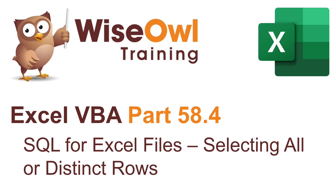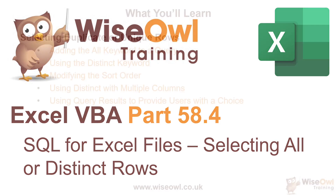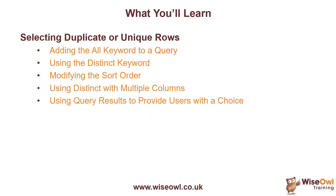Welcome to this Wise Owl Excel VBA tutorial. In this part of our series on writing SQL for Excel files, we're going to look at how you can select either all or the distinct rows from a data source. We'll begin by explaining how to add the ALL keyword to a query and what that does, and then look at how to return the unique values from a column using the DISTINCT keyword. We'll also look at how you can modify the sort order applied when you use the DISTINCT keyword in a query, and what happens when you use multiple columns with the DISTINCT keyword.